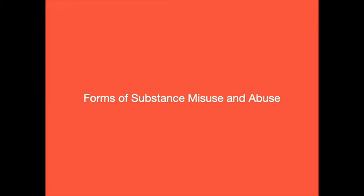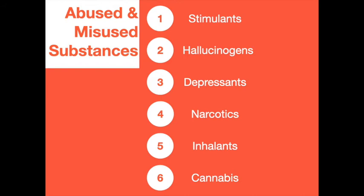Substances are categorized according to their effects on the body. Six major categories are stimulants, hallucinogens, depressants, narcotics, inhalants, and cannabis products. The category depends mostly on the effects on the central nervous system or the way the substance is taken. Some substances depress the nervous system while others speed up its activity. A heightened or exaggerated effect may be produced when two or more substances are used at the same time — called a synergistic effect, which can be deadly.